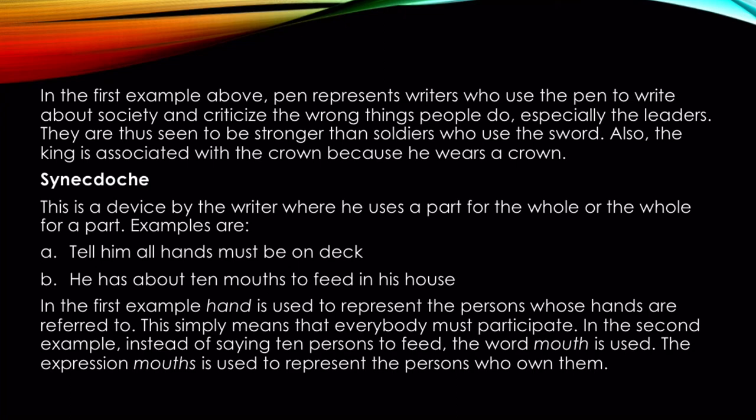Now we have synecdoche — the last topic for Part 3, and then we'll have Part 4. Synecdoche is a device where the writer uses a part for the whole or the whole for a part. Examples: 'Tell him all hands must be on deck' and 'He has about 10 mouths to feed in his house.'